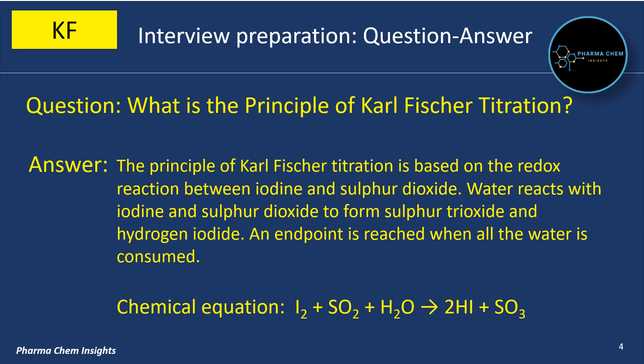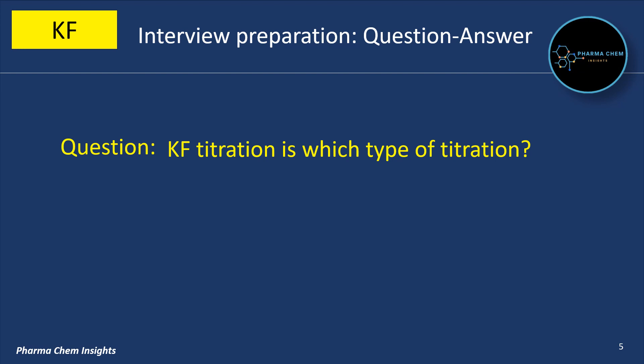What is the principle of Karl Fischer Titration? The principle is based on the redox reaction between iodine and sulfur dioxide. Water reacts with iodine and sulfur dioxide to form sulfur trioxide and hydrogen iodide. An endpoint is reached when all the water is consumed. The chemical equation is: I2 + SO2 + H2O gives 2HI + SO3.